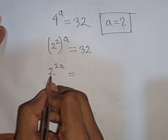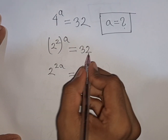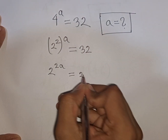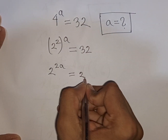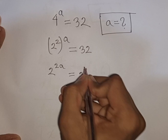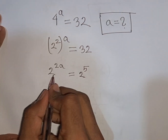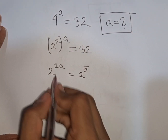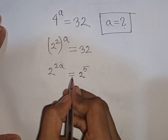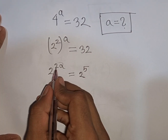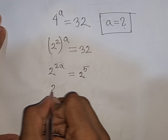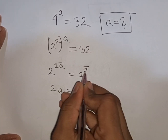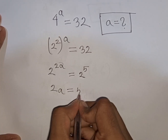We see the base is 2 on the left, but we have 32 on the right. So 32 can be written as 2^5. Now we see the same base 2 on both sides, so 2 will cancel and the powers will be equal: 2a = 5.